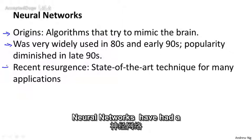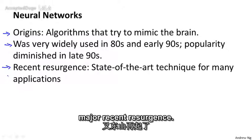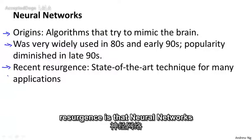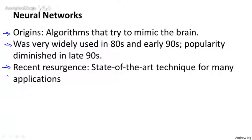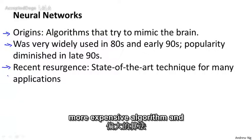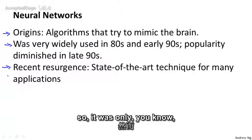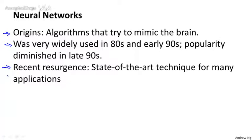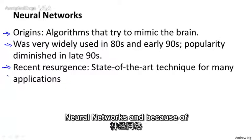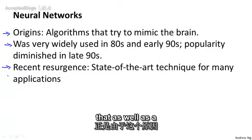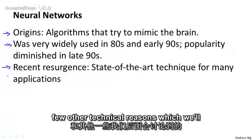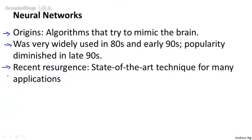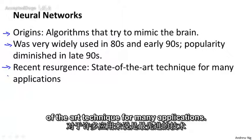But more recently neural networks have had a major resurgence. One of the reasons for this is that neural networks are a computationally somewhat more expensive algorithm, and so it was only more recently that computers became fast enough to really run large-scale neural networks. Because of that, as well as a few other technical reasons we'll talk about later, modern neural networks today are the state of the art technique for many applications.